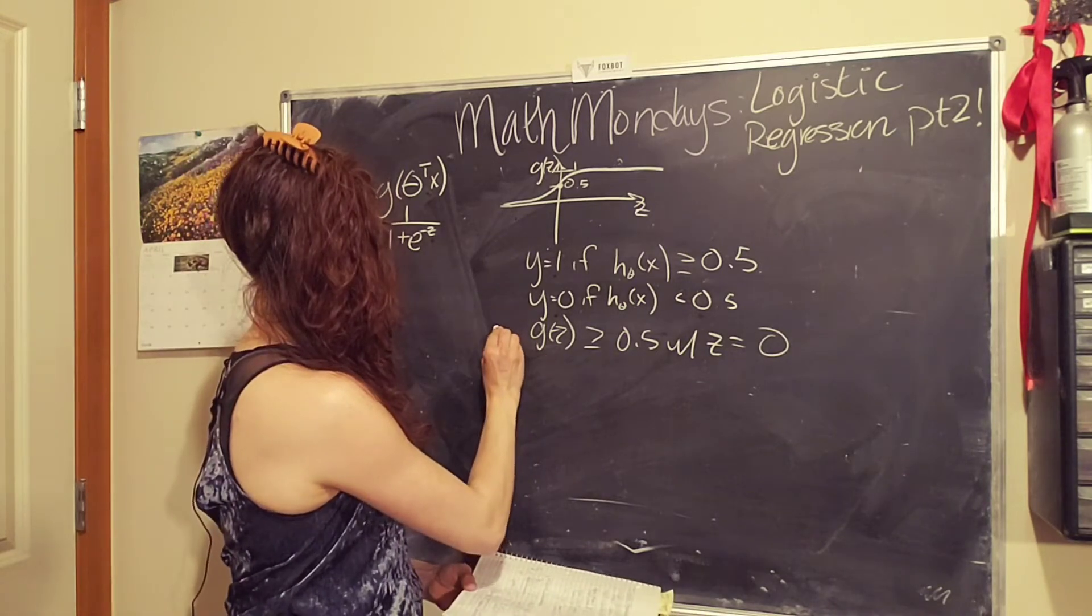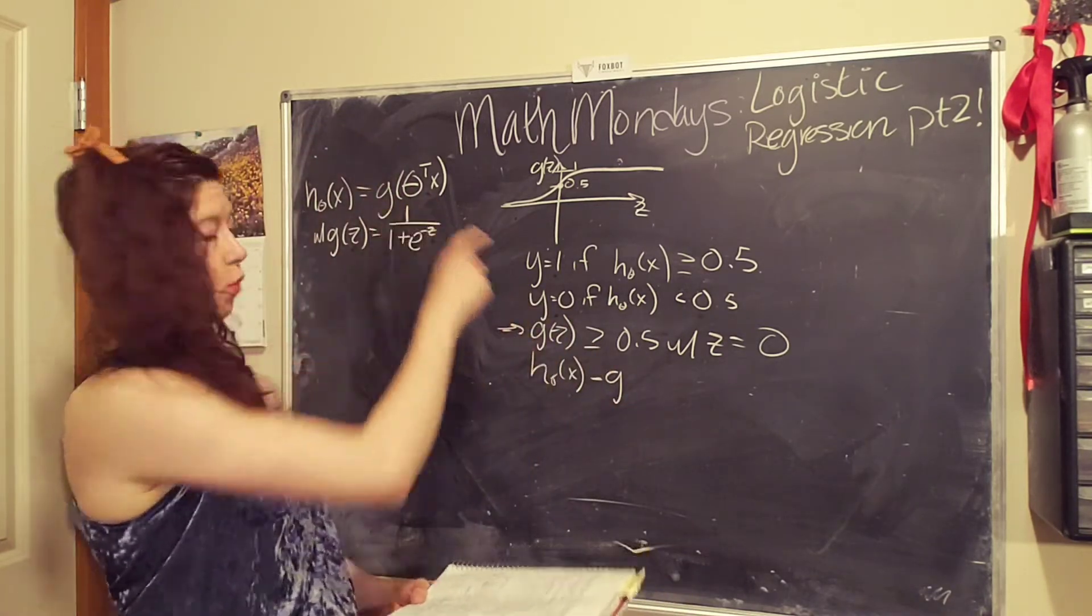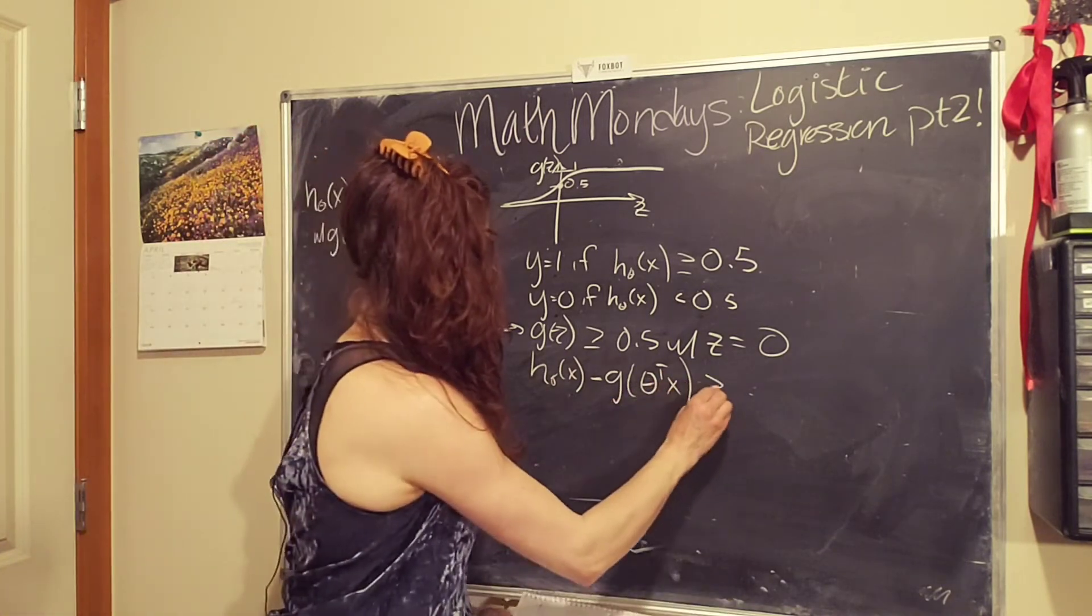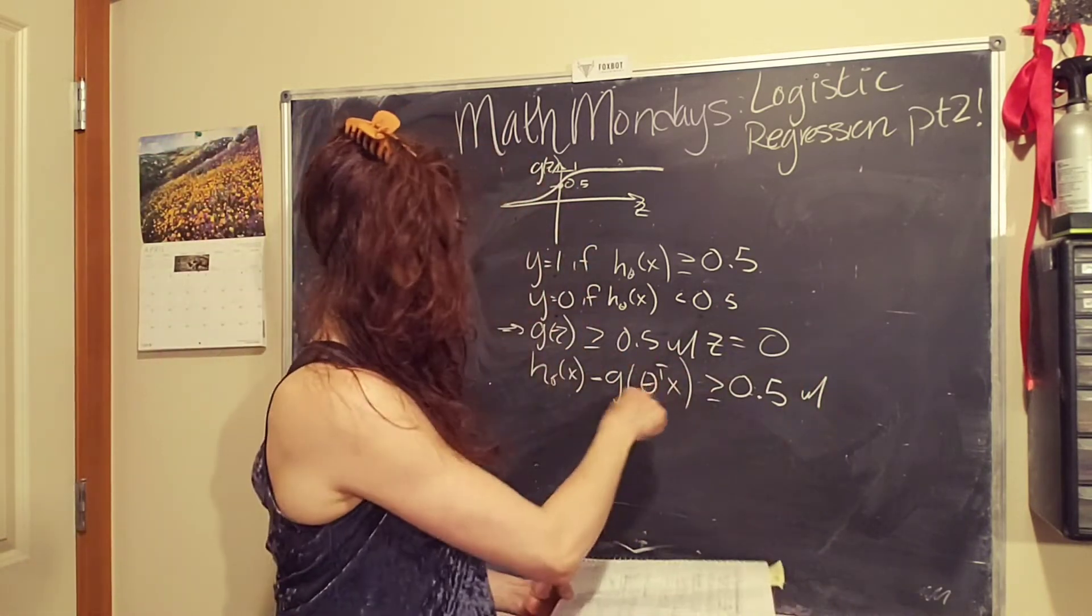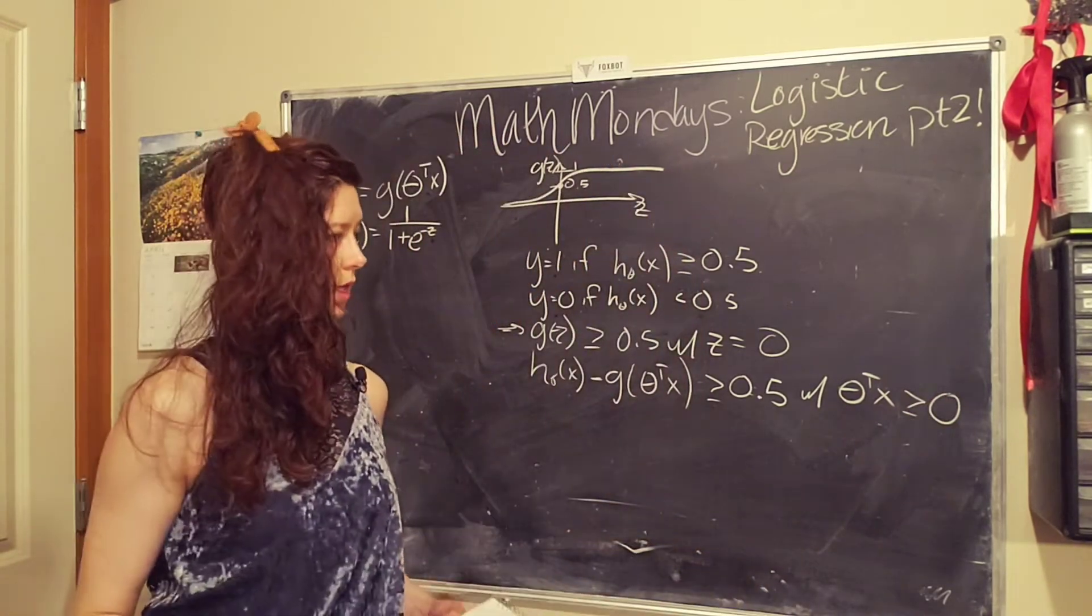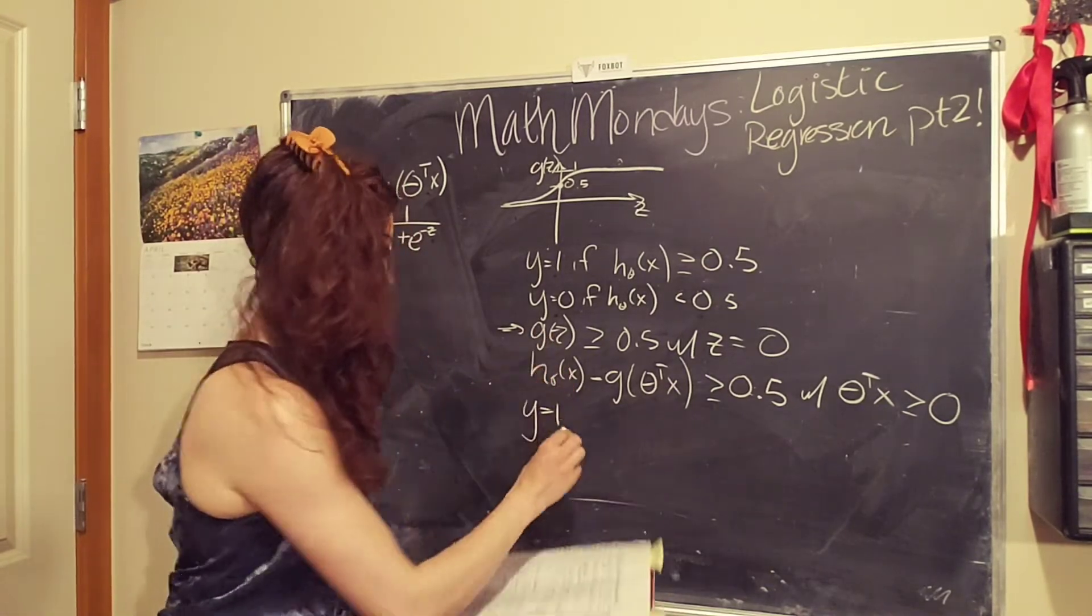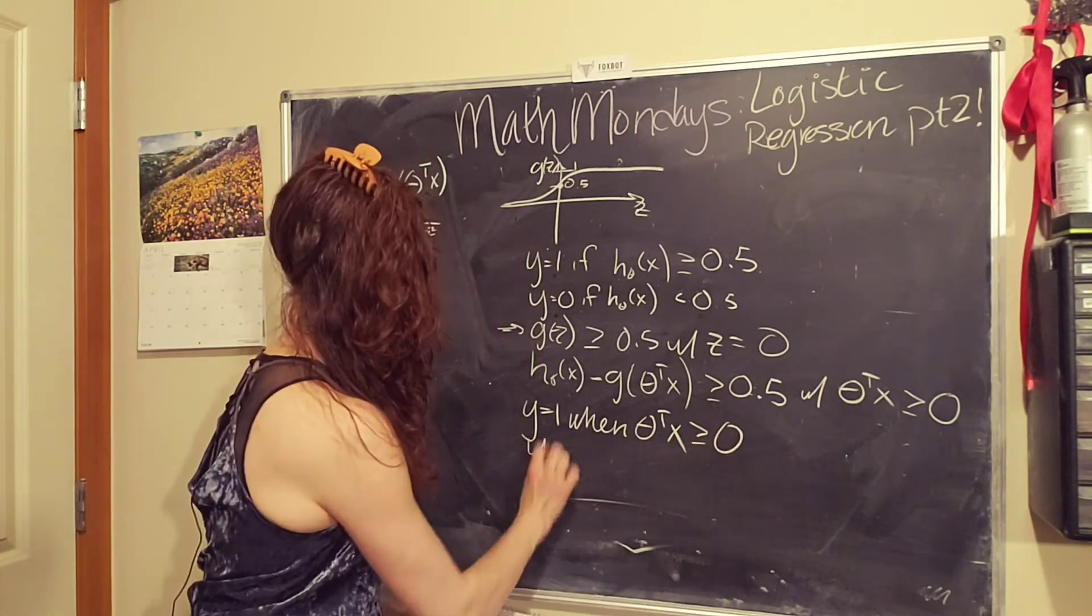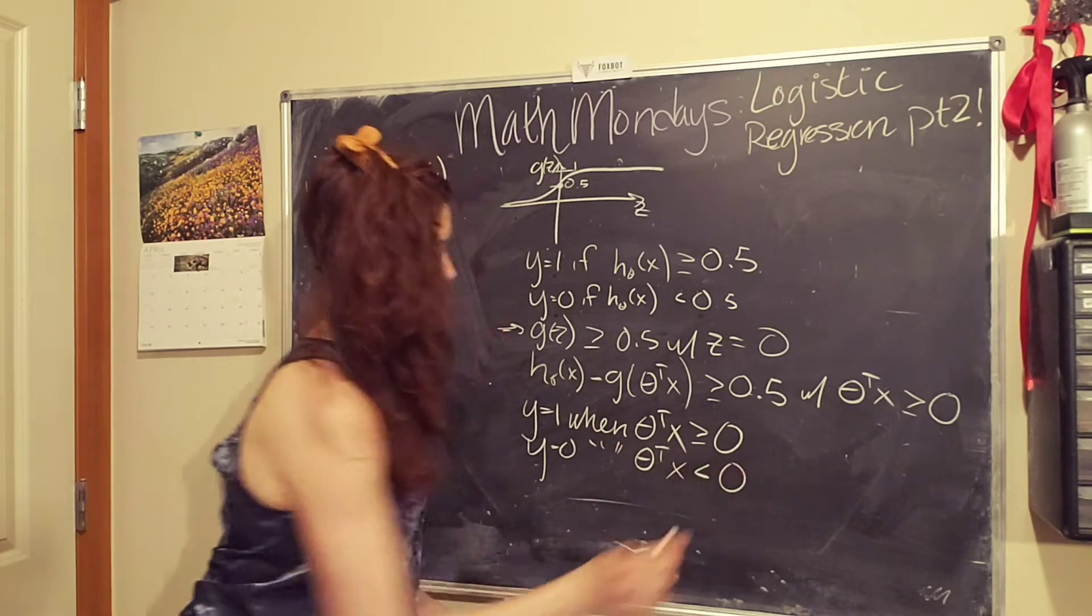So then we know that h, our hypothesis function of x, it has this form here, our parameter matrix times our variable vector. This is going to be greater than 50% when our stuff in the middle, our parameter matrix times our variable is greater than or equal to zero. Okay, so then this is all to say that y equals one when our parameter matrix times our variable is greater than or equal to zero, and y equals zero. I'm going to be lazy, so we're just going to say do that, or let's bring it down, when it is less than zero.